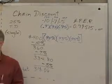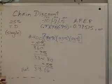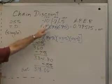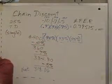In other words, that's the same as saying, after all is said and done, we're going to pay about 79.5% for this item. That's our net price rate.